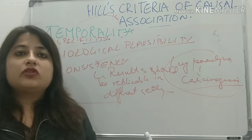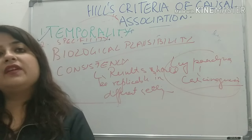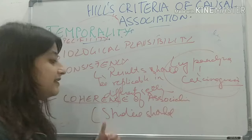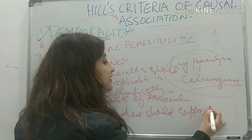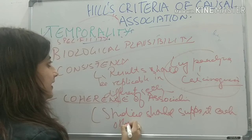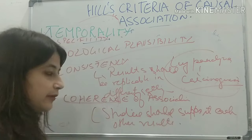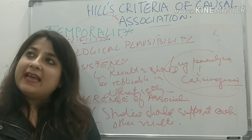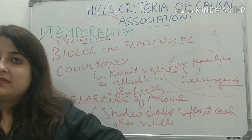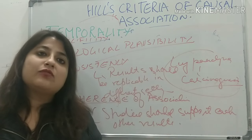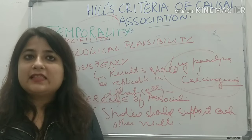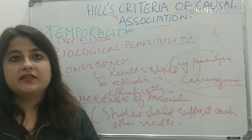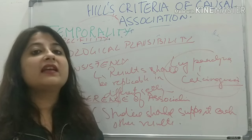Next is coherence of association, meaning studies should support each other's results. For example, if one study finds smoking is a risk factor for lung cancer, another finds smoking is a risk factor for lung cancer in females, and a third finds it in males — all three different studies reach the same common conclusion: smoking and lung cancer go together. That is what coherence of association means.